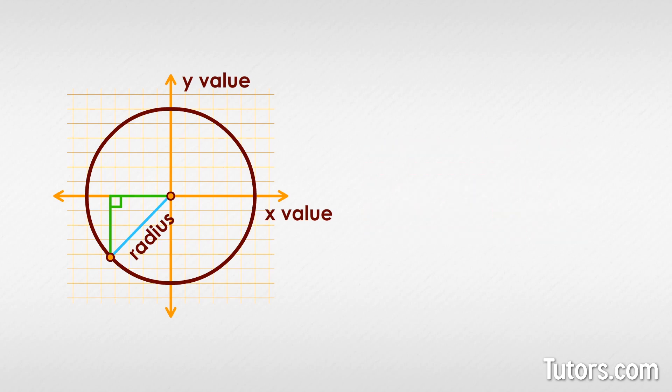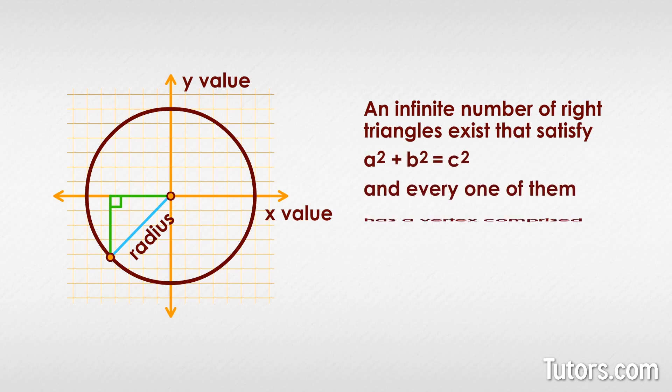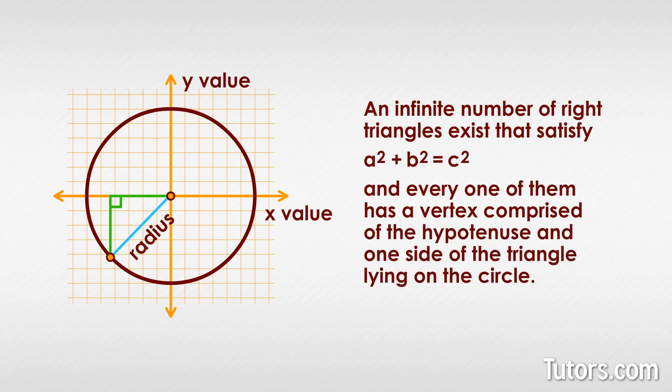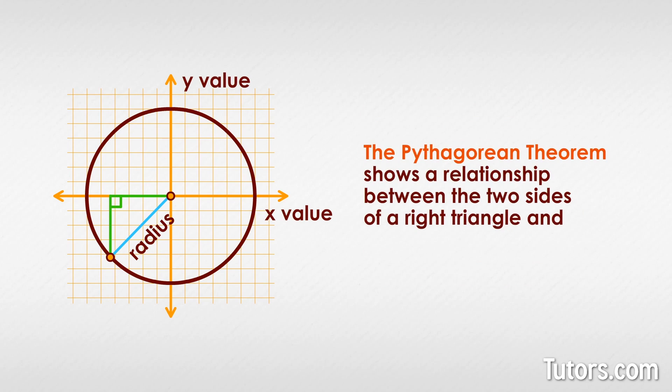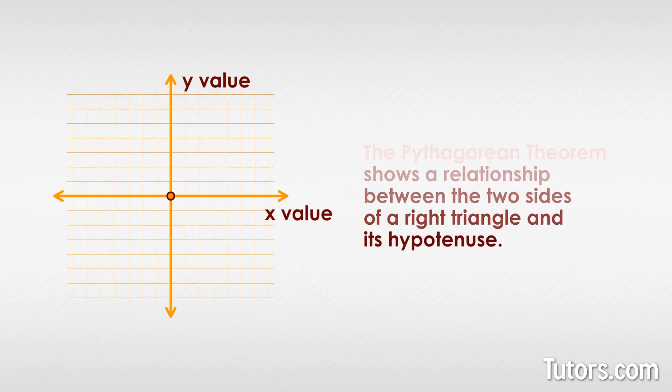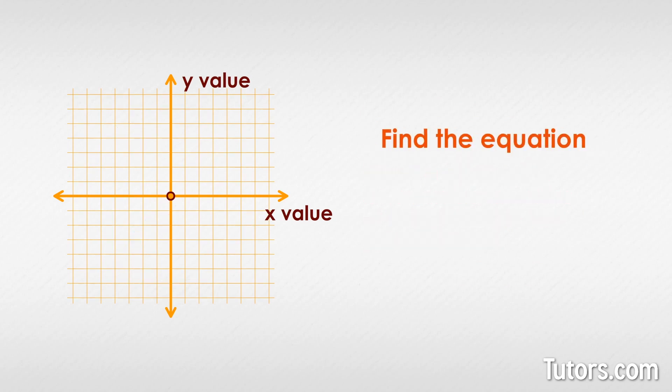A circle has infinite points, since points are dimensionless positions in space, so at least in the pure science of mathematics, an infinite number of right triangles exist that satisfy a squared plus b squared equals c squared, and every one of them has a vertex comprised of the hypotenuse and one side of the triangle lying on the circle. The Pythagorean theorem shows a relationship between the two sides of a right triangle and its hypotenuse. Now let's find the equation of a circle.